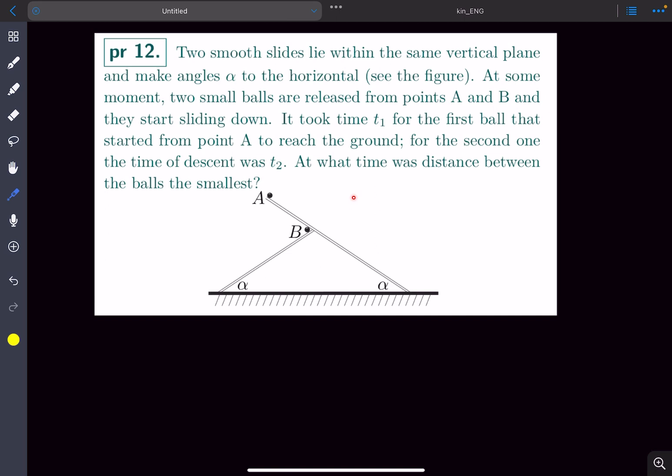Hey everyone, in this problem we have two slides that are smooth and both make an angle alpha to the horizontal. Two balls are released at the same time with zero initial velocity.